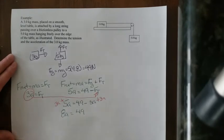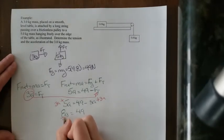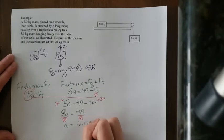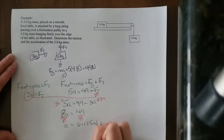To get A by itself, I divide both sides by 8. 8s cancel. And I finally have A is equal to 6.125 meters per second squared.